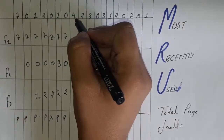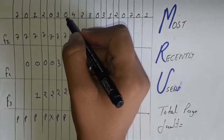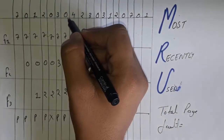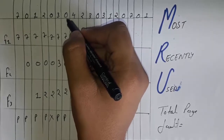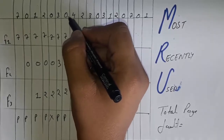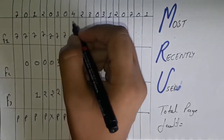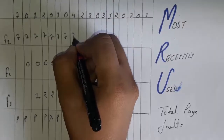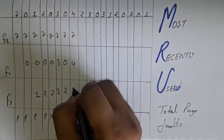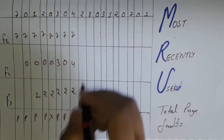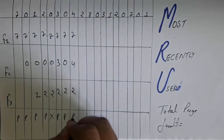Now page 4 arrives. We have to remove page 0 again because we have just used 0 — this is the Most Recently Used page, so we remove it. Write 7, 4, 2 and mark P.